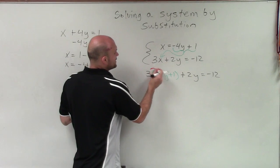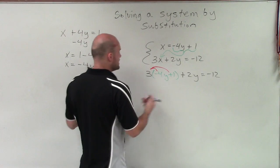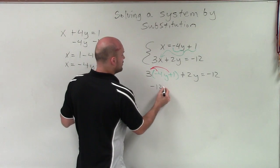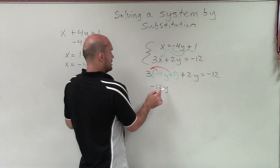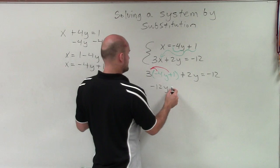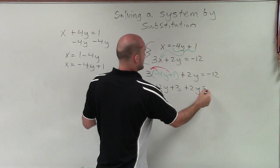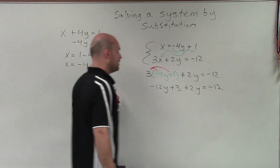So before I do that, though, I need to simplify this a little bit. So I apply the distributive property. So I have negative 12y plus 3 plus 2y equals negative 12.